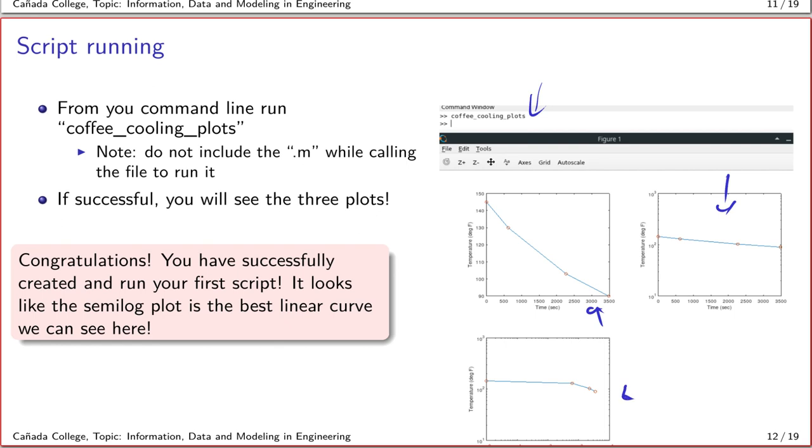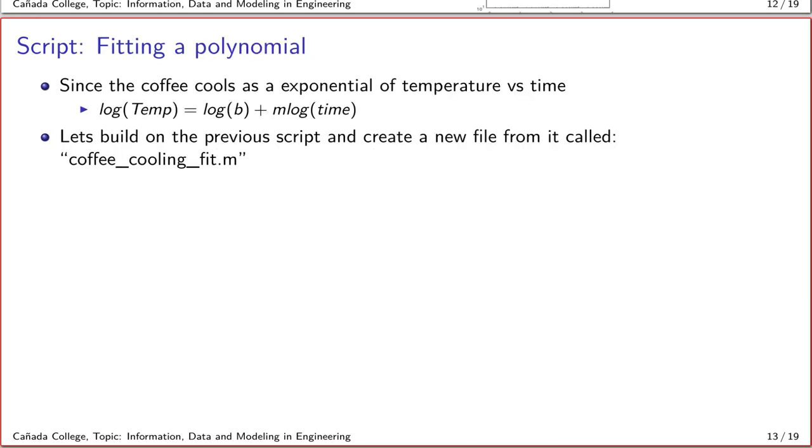Our final step is to actually do the fitting process so we can find the intercept and the slope for the exponential function. We will open up that original file in the editor window and now rename it as a new file called coffee_cooling_fit and continue on from where we left off.